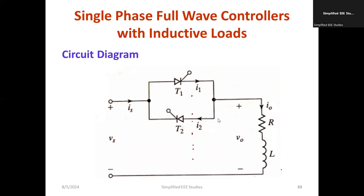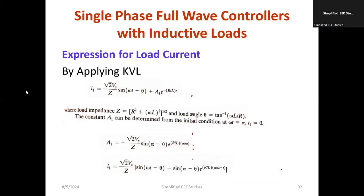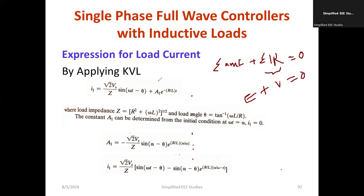Applying KVL: in a closed loop, the sum of EMF and the voltage drops is equal to zero. From the differential equation, you can separate and compute the value of I1. Now since we are using an inductive load, Z is the impedance, equal to the square root of R-squared plus XL-squared, where XL equals L times omega — XL is known as inductive reactance, the resistance offered by the inductive circuit.